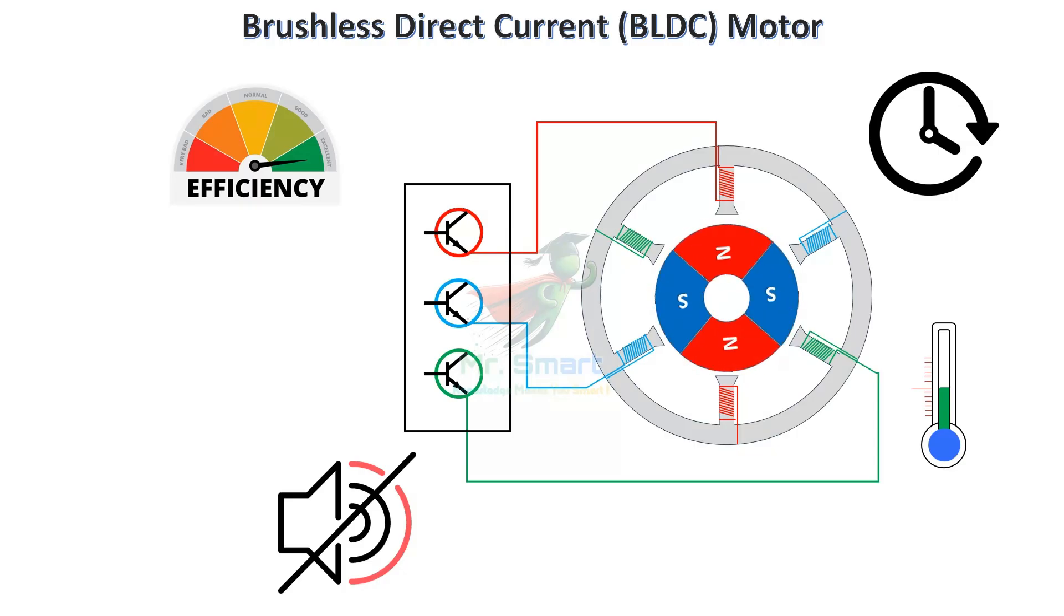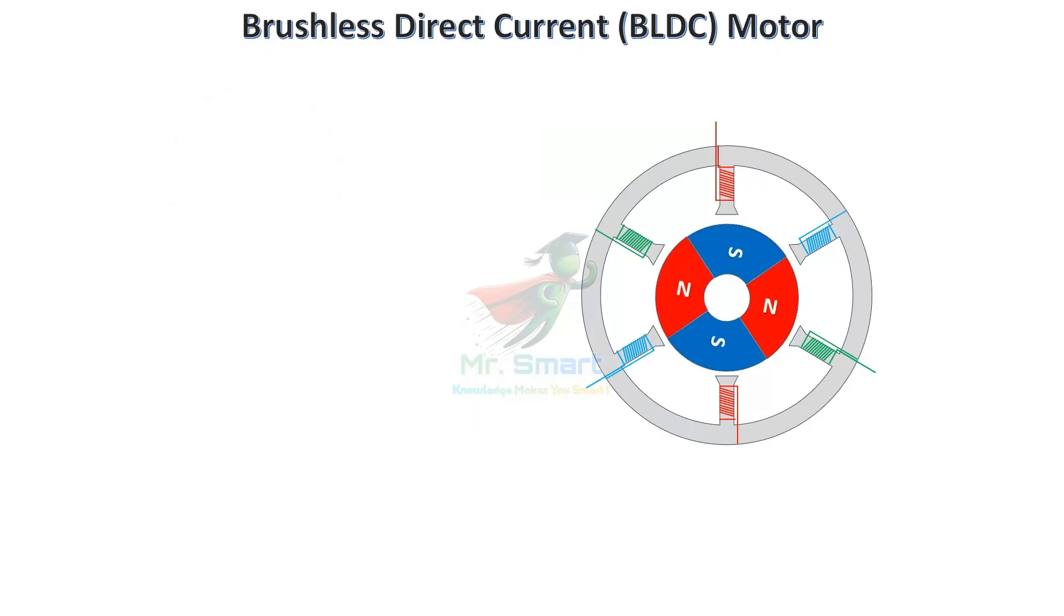Let's see how a BLDC motor works. A BLDC motor consists of a permanent magnet rotor, which provides rotation without physical contact.